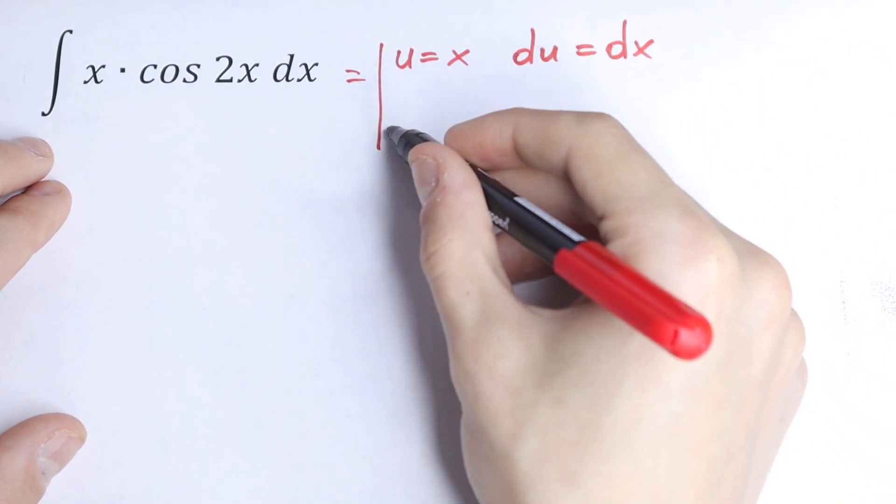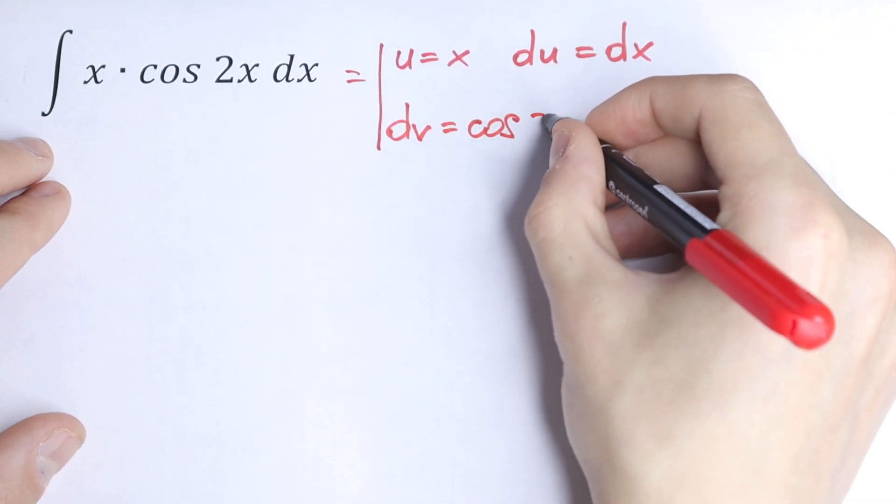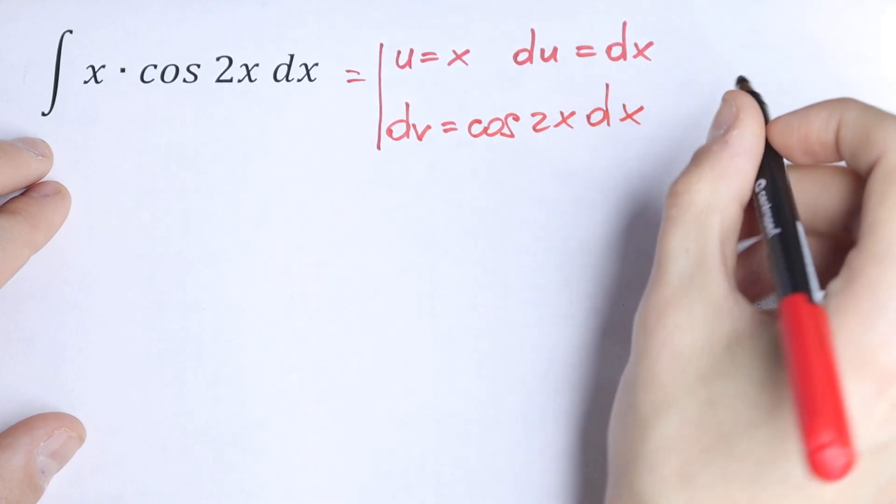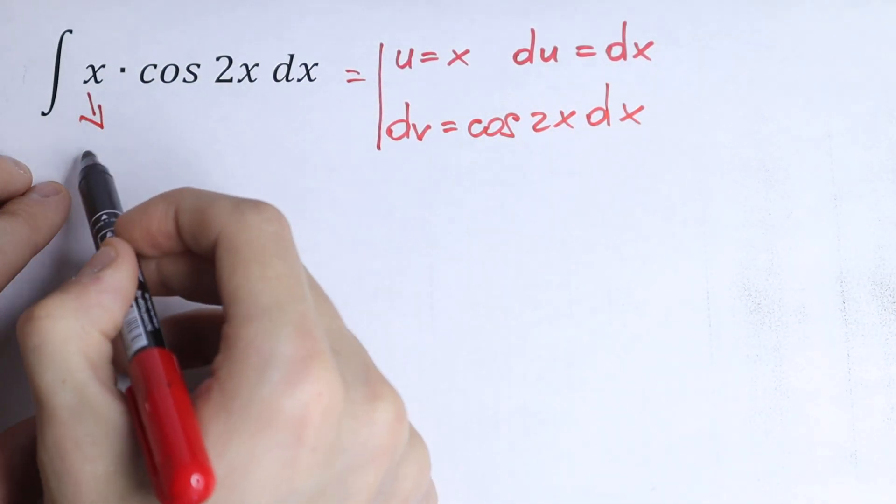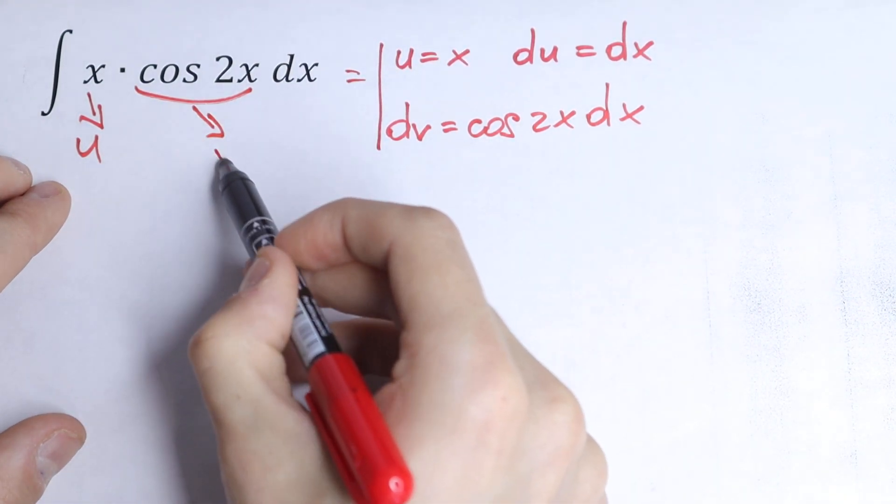And let's set dv equal to cosine 2x dx. We take x as u and cosine 2x dx as dv.